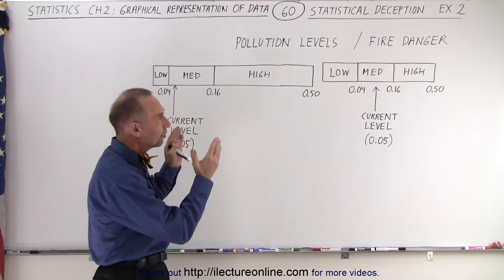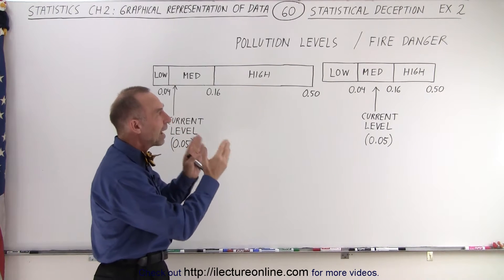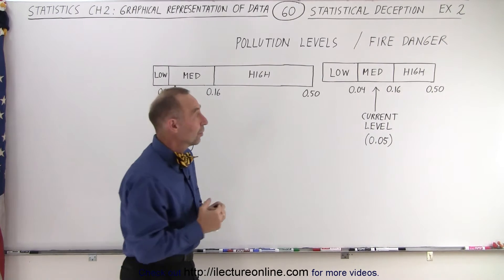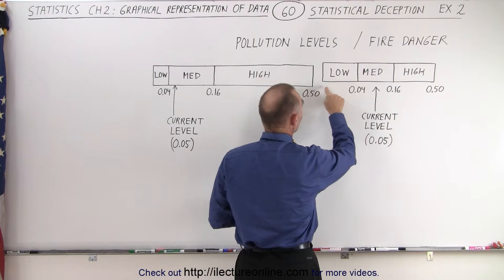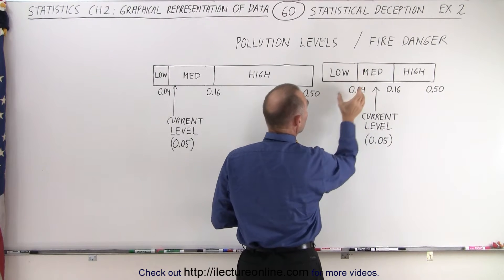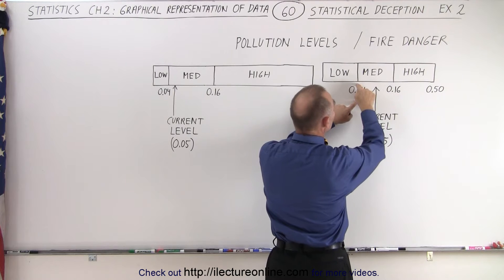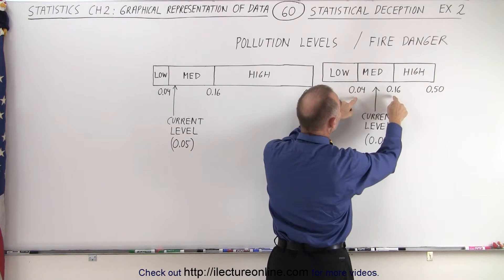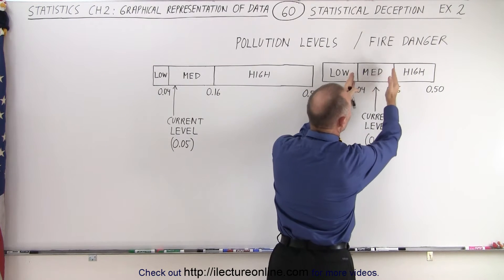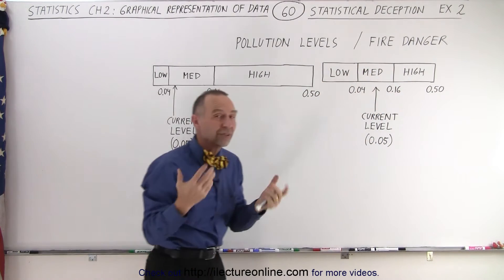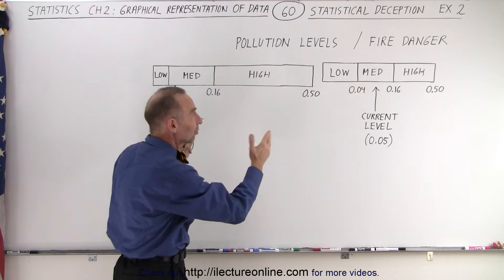First of all, the scale of the low, medium, to high is not truly representative of the scale represented by the numbers. The distance from zero to the boundary between low and medium is 0.04, where the distance from the boundary of low to medium to the boundary of medium to high is 0.16. This should be three times as long as this if you're going to represent it truly by the size of those boxes.